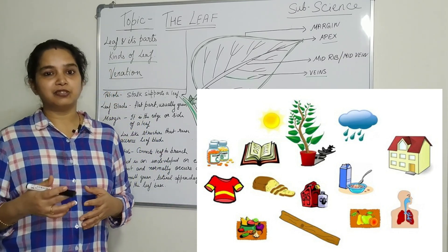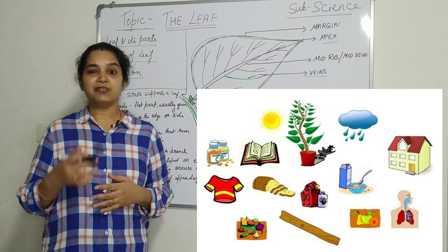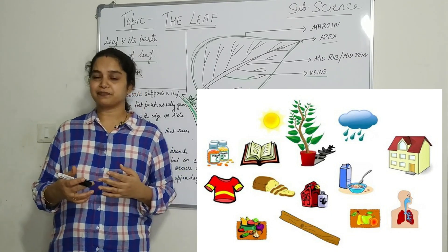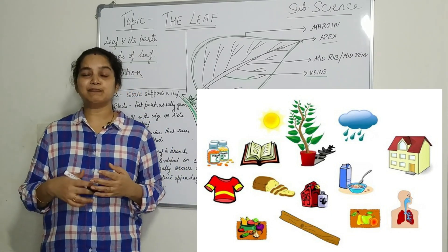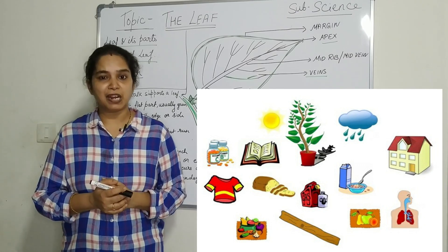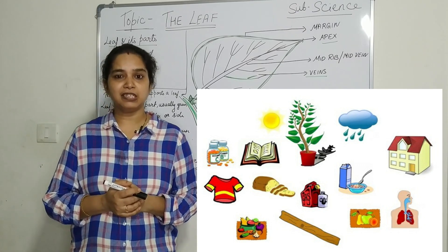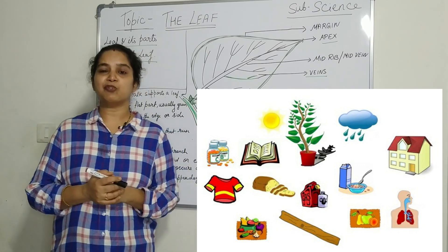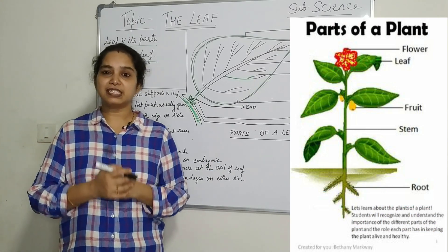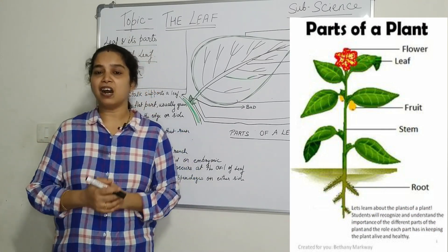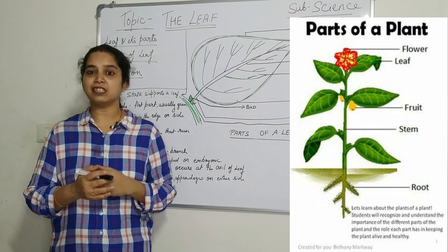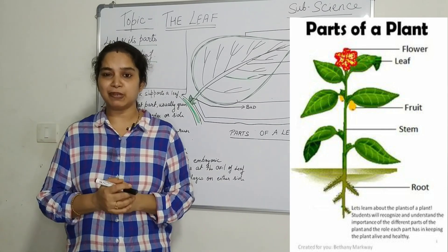Today we will learn more about the plants — that is, the parts of the plant. You know what are the parts of the plant? They are root, stem, leaves, flower, fruits, and bud. These are the parts of the plant.